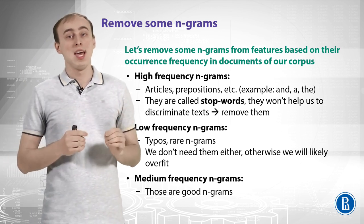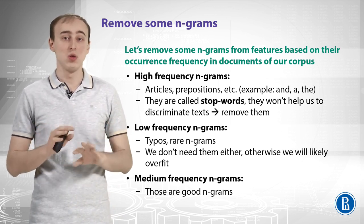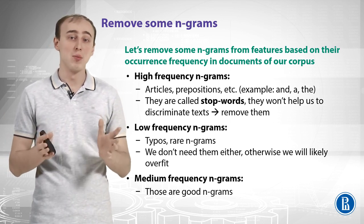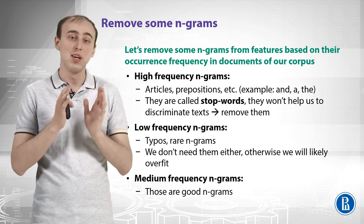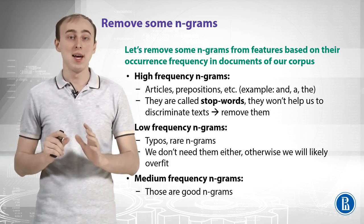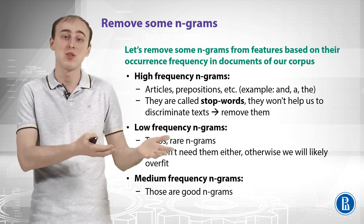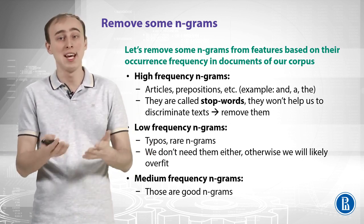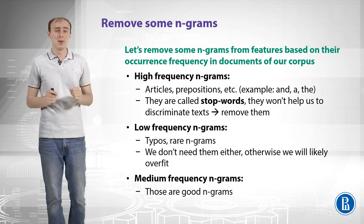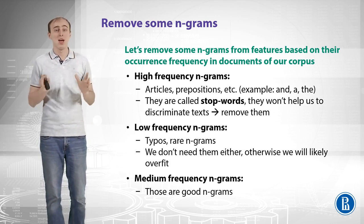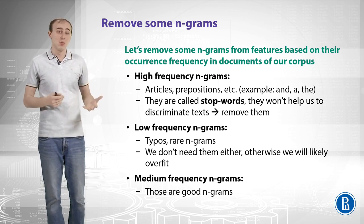Another story is low-frequency n-grams. If you look at low-frequency n-grams, you can actually find typos because people type with mistakes, or rare n-grams that are not seen in any other reviews. Both of them are bad for our model, because if we don't remove these tokens, very likely we will overfit. The classifier might see a review with a typo that appeared in only two reviews and learn dependencies that aren't really there. And the last one is medium-frequency n-grams — those are really good n-grams because they're not stop words and not typos, and we actually should look at them.